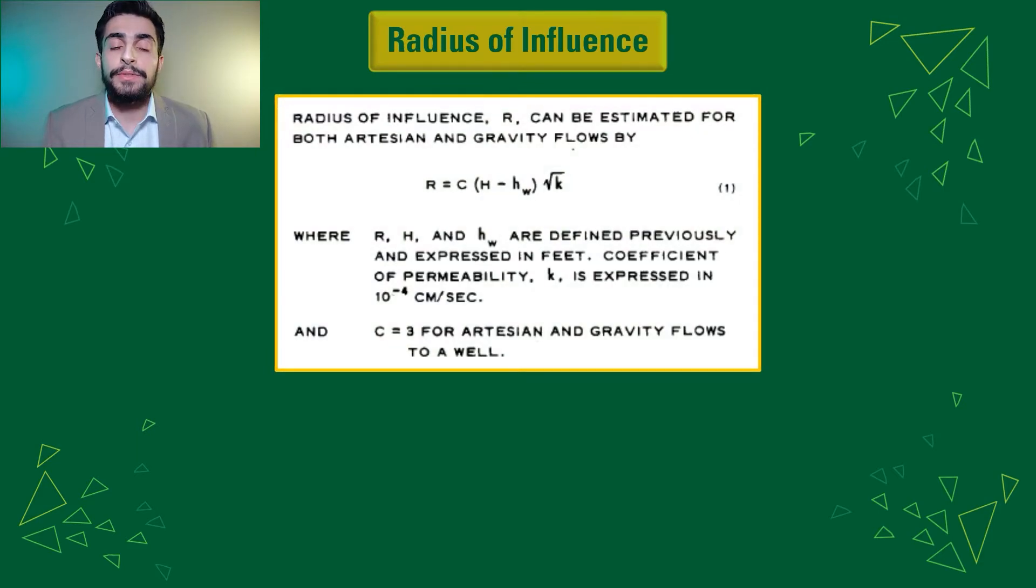So the radius of influence is found through this equation that is extracted from a dewatering manual, where C is equal to 3, specifically since we consider this to be gravity flow.